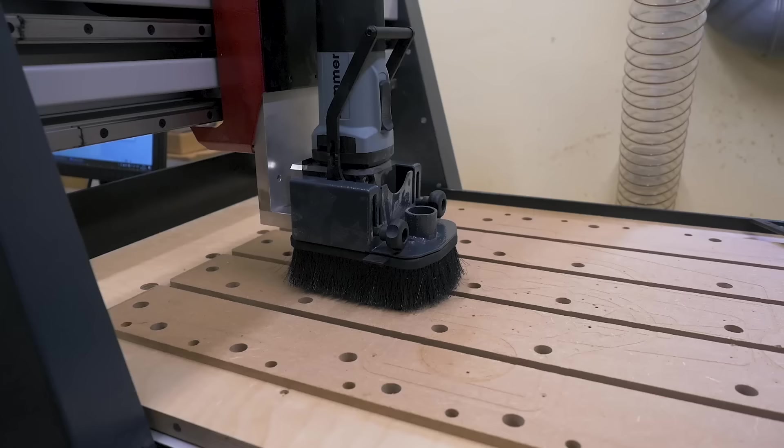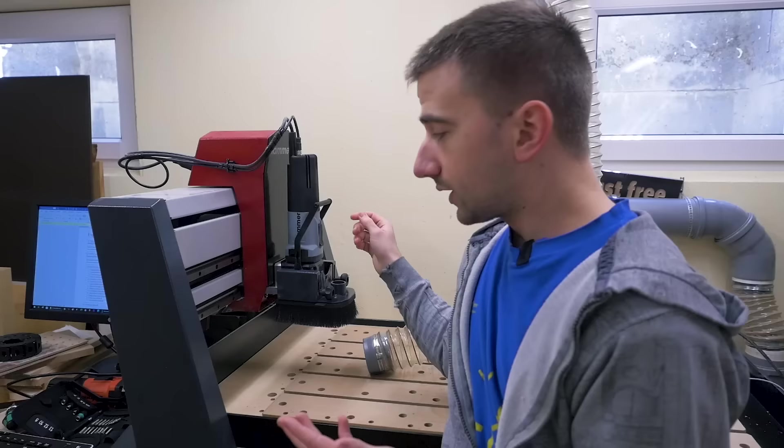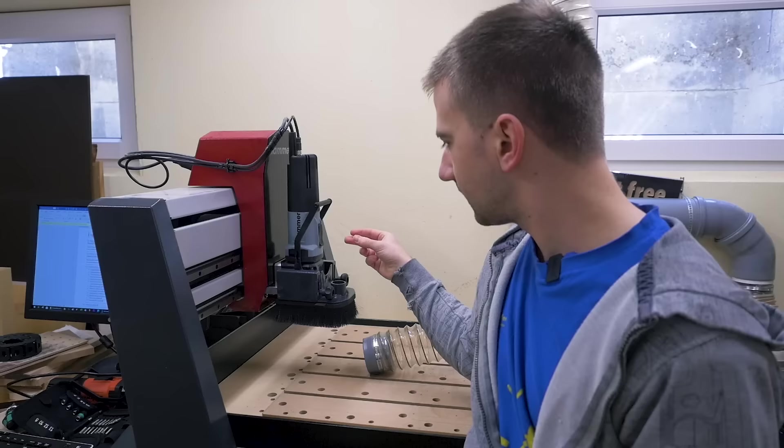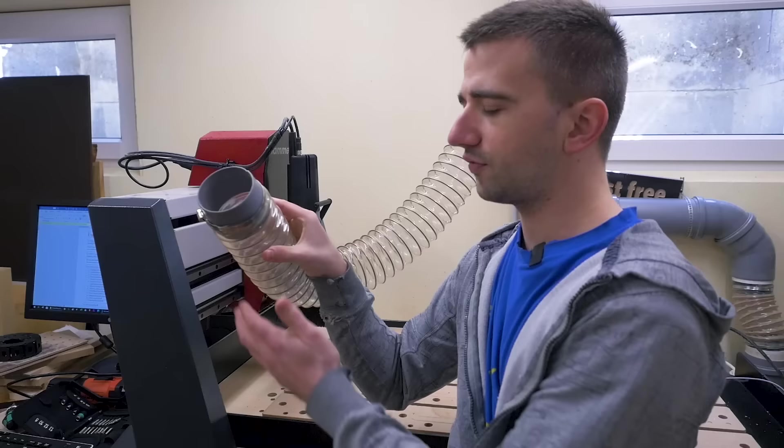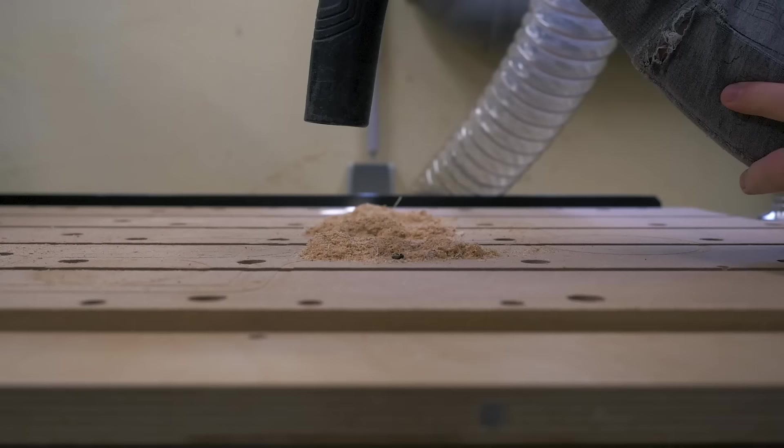First of all, why did I want to make this upgrade? This dust shoe that came with the machine gets the job done, but there are a few major issues and limitations with this kind of design. It's made for a shop vac hose size. I can totally understand why they chose that size. Looking at it from a business or selling perspective, it only makes sense to offer a port size that everybody can use. Everybody with a workshop has some kind of shop vac, and not too many people have a dust collector with a big hose.